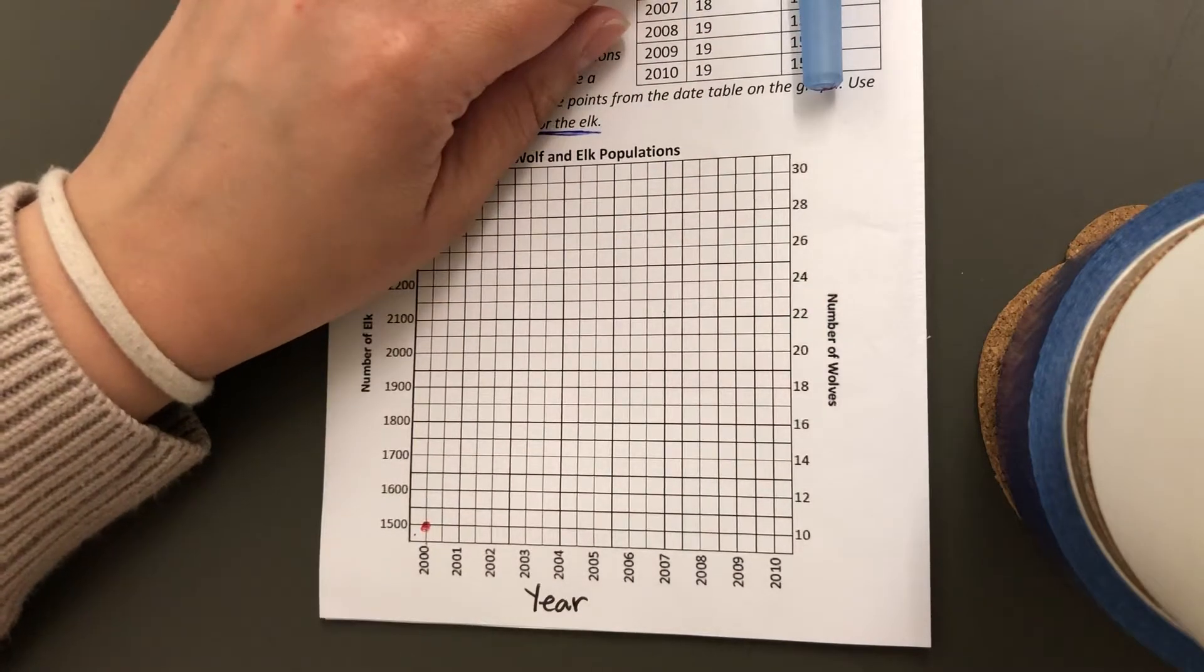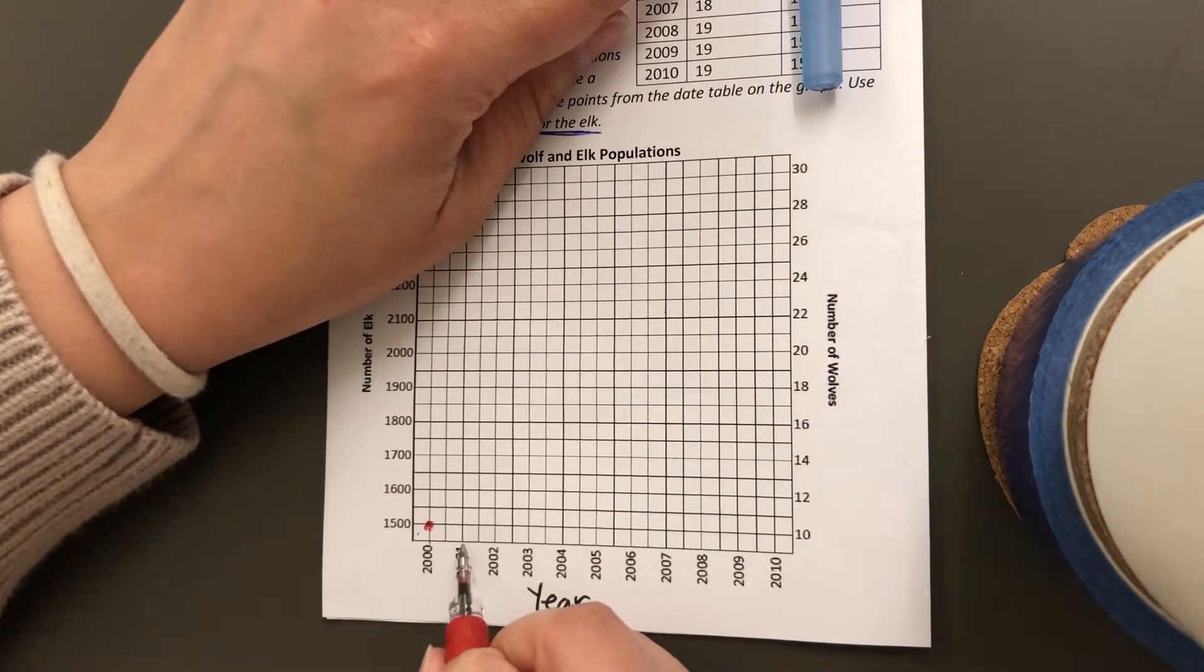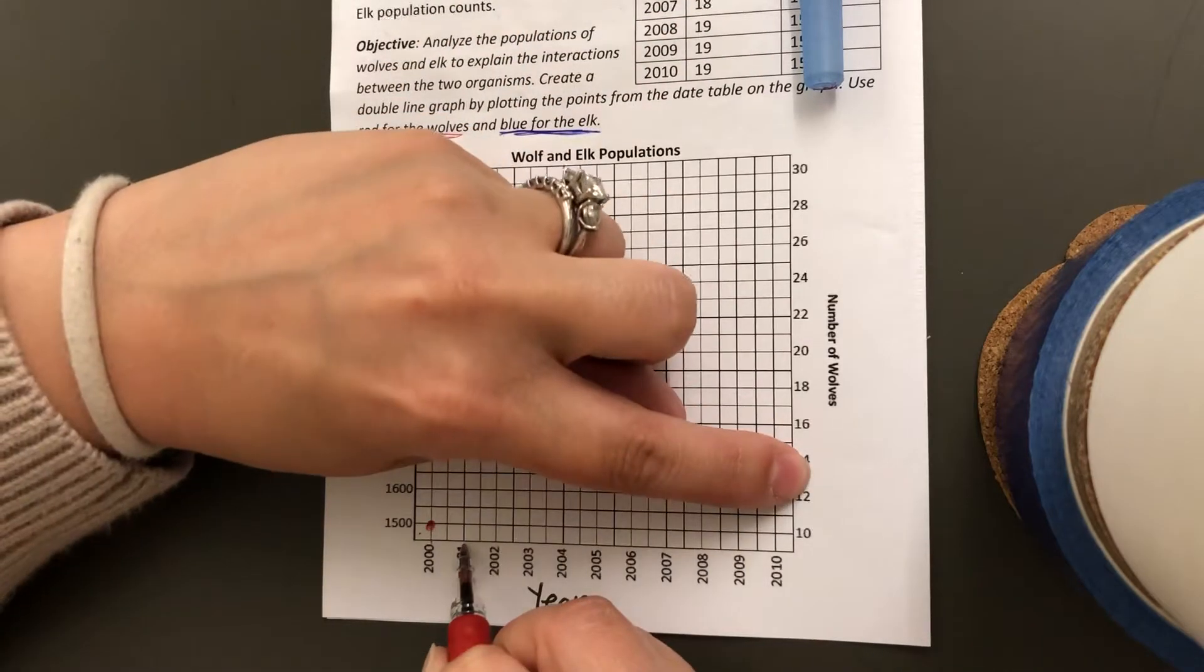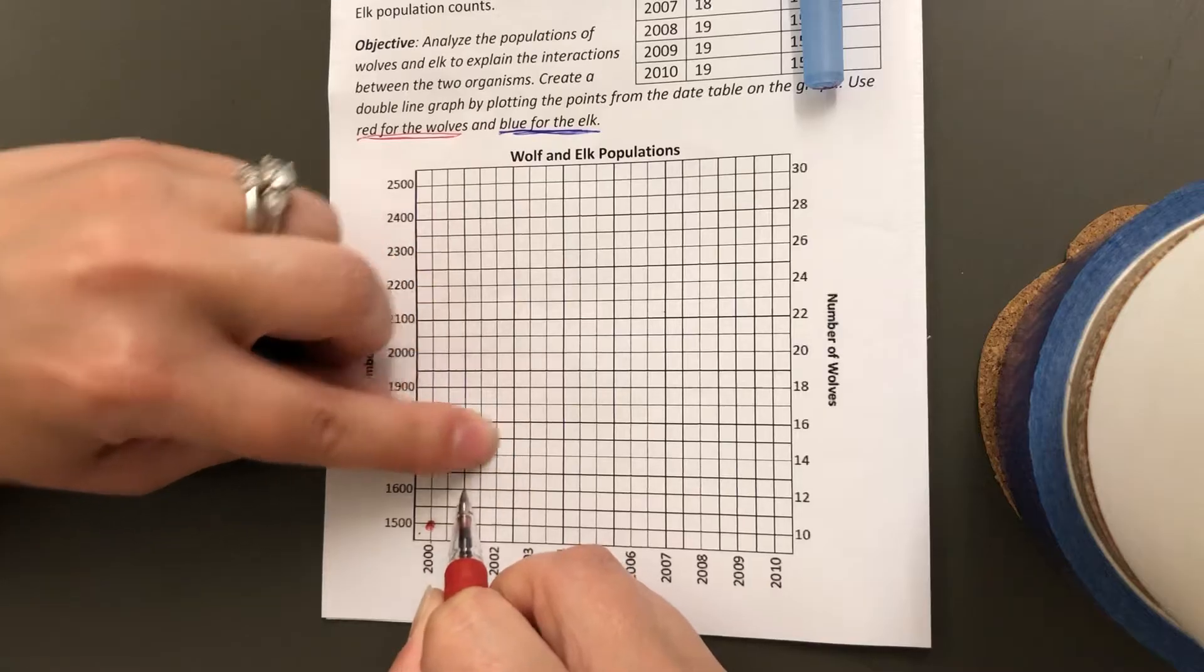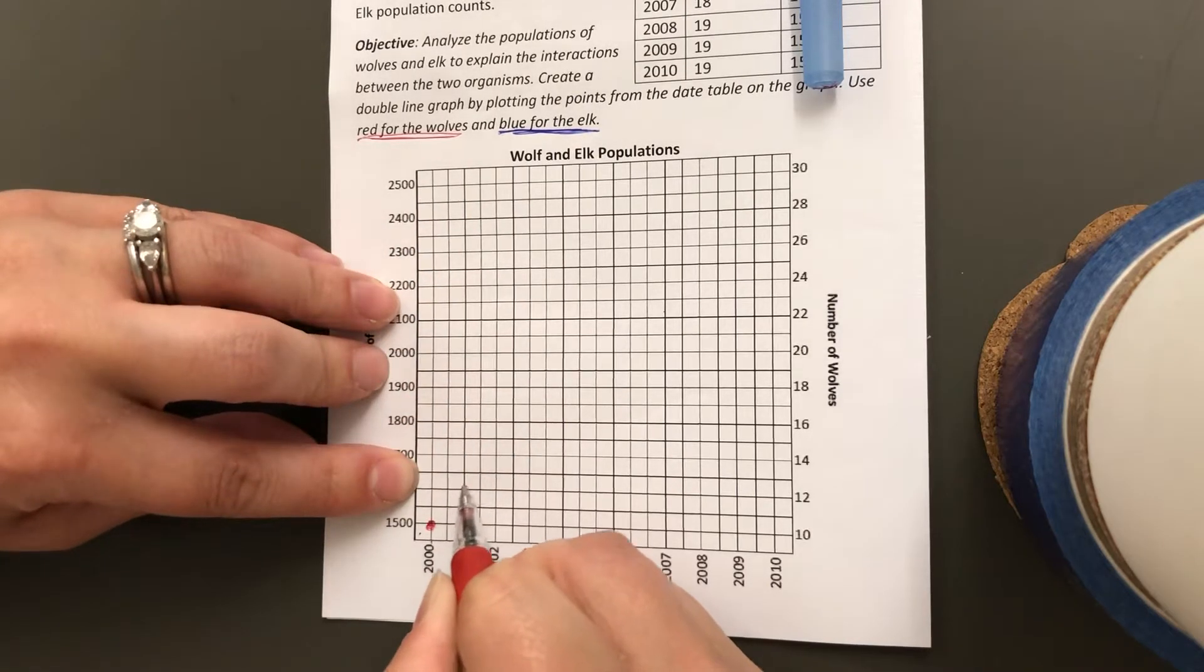Year 2001, it was 12. So in year 2001, I'm going to find where it says 12 and find where those two points intersect, right here, and make a dot.